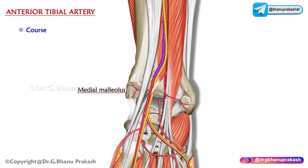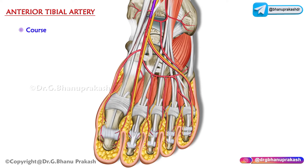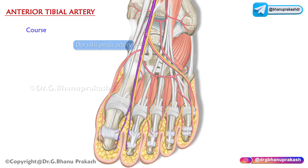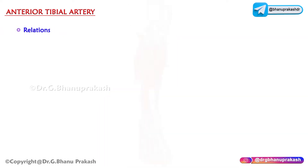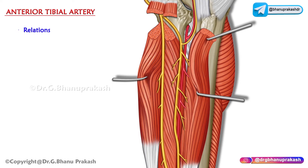In the anterior compartment, it runs vertically downwards to the point midway between the medial and lateral malleoli, where it enters the foot. After entering the foot, it changes its name to the dorsalis pedis artery, which ends near the web between the big and second toes.